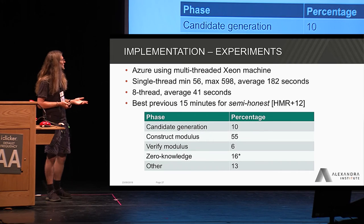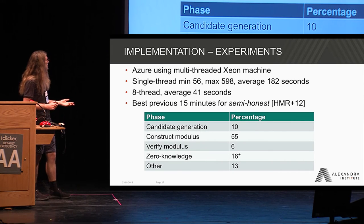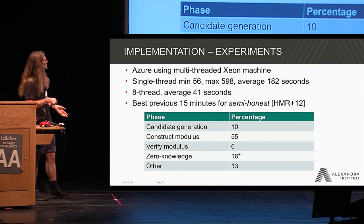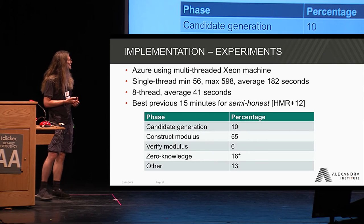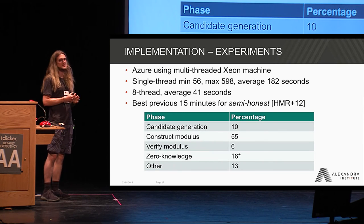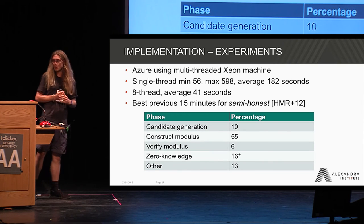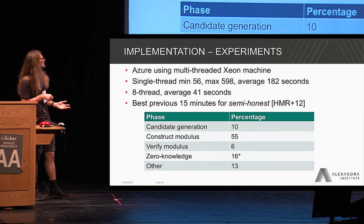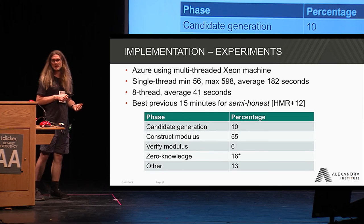Looking at where the time is actually spent, we see that the zero knowledge aspects don't take a lot of the total time, as I argued — this is basically what gives the malicious security and it doesn't contribute a lot. The main thing is actually the construction of the modulus. It should be noted that this also involves the prevention of selective failure, which might end up taking some of the time. So this is definitely where we would like to shave a bit of time off.